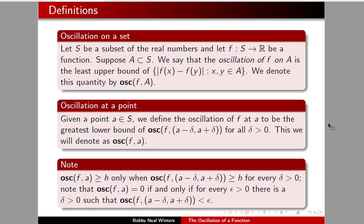Let S be a subset of the real numbers and let f from S to ℝ be a function. Suppose that A is a subset of S. The oscillation of f on A is the least upper bound of the set of |f(x) - f(y)| whenever x and y are elements of A. So we're looking at how far apart values can get — this is the maximum distance that f can take points apart from each other on the set A. We denote it by osc(f, A).